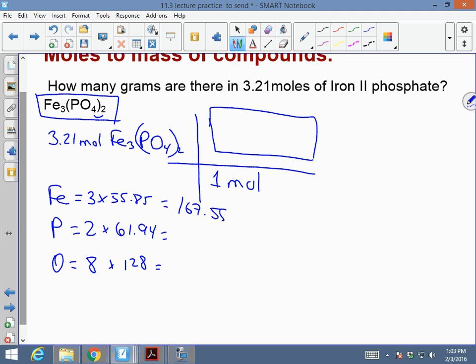This is times 2, 30 times 2, sorry, 130 times 2. 30.97 times 2, which should give you 61.94. And this is times 16, which is 128. So those are your masses, and this is the molar mass when you add them up.